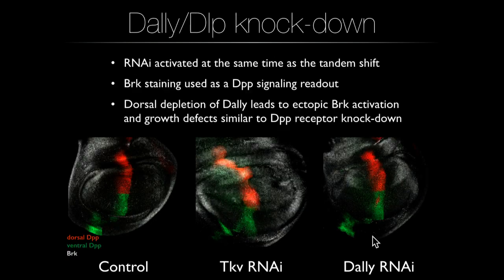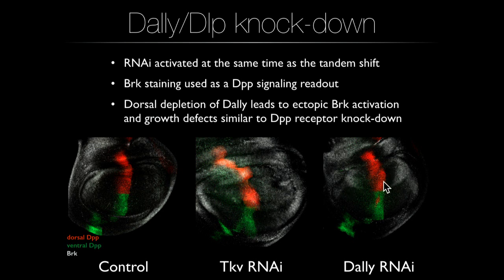Finally, when we delete the glypican DALI using RNAi knockdown, we see an effect very similar to knocking down the receptor Thickveins. This shows that glypicans are truly involved in gradient formation. Without them, the disk not only shows increased Brinker expression — the pathway inhibitor — very close to the DPP source, but also the dorsal compartment becomes smaller than the ventral. This demonstrates that the DPP gradient is not formed properly if glypicans are not there to retain the extracellular protein for the time required for growth.